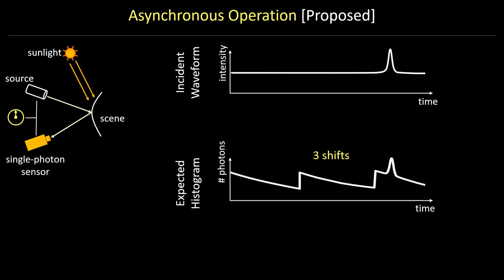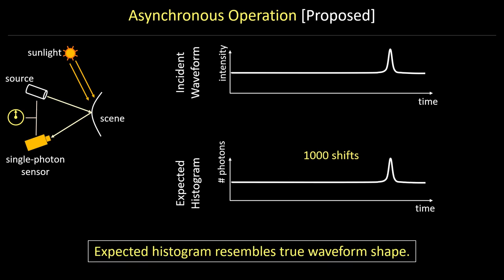As we increase the number of shifts, the histogram starts resembling the true waveform shape, free from sunlight distortion. This is the key idea of asynchronous acquisition.